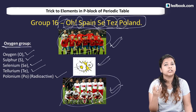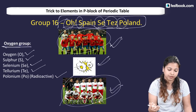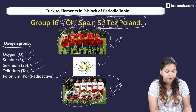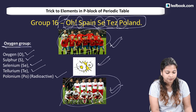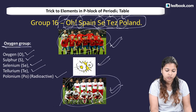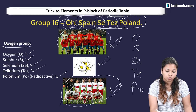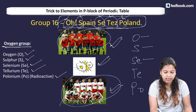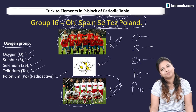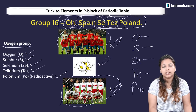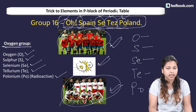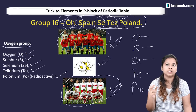O is for oxygen, then sulfur is for sulfur — selenium, tellurium and polonium. So this is our group 16, which we can remember from the sentence: O, Spain, Poland.